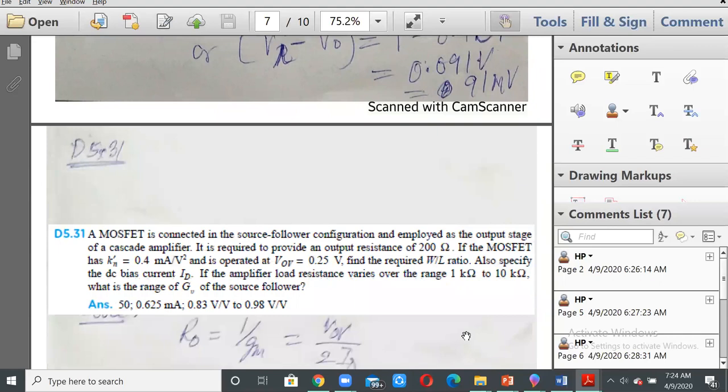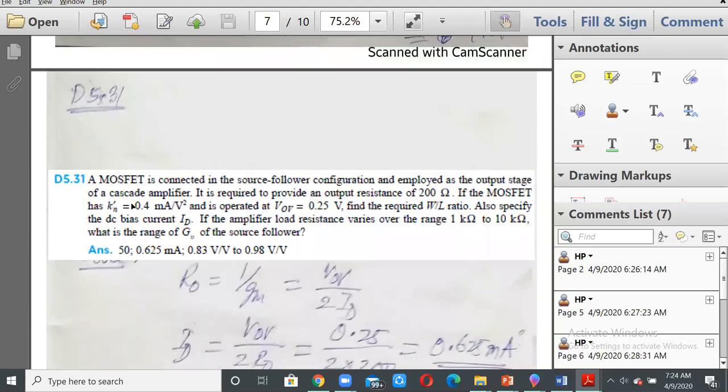Then we have Problem 5.31. Here the MOSFET is connected again in the source follower configuration, employed as the output stage of a cascade amplifier. It is required to provide an output resistance of 200 ohms.